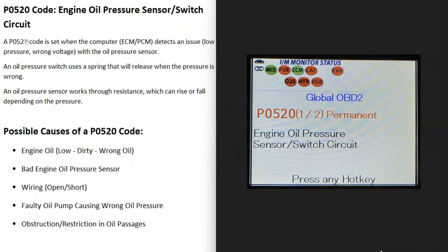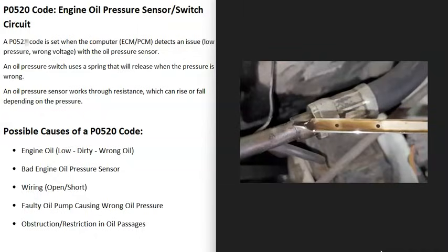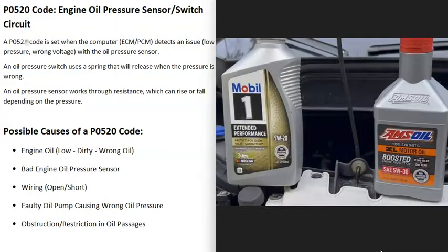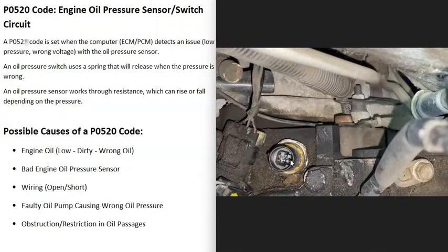The first thing to check whenever there's an engine oil pressure problem is to check the engine oil — be sure it's not low and not really dirty, because that could cause problems. Another thing that can throw these sensors off is if the wrong oil was used; if it's too thick or too thin, that can also throw the sensors off. So the first possible cause is low engine oil, dirty engine oil, or the wrong oil type.